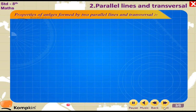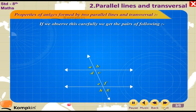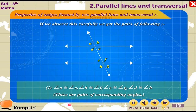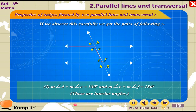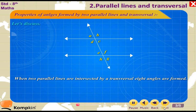Properties of angles formed by two parallel lines and a transversal. Observing carefully, we get the following pairs: 1. Angle A ≅ Angle E, Angle B ≅ Angle F, Angle C ≅ Angle G, Angle D ≅ Angle H — these are pairs of corresponding angles. 2. Angle D ≅ Angle G, Angle B ≅ Angle H — these are pairs of interior alternate angles. 3. Angle A ≅ Angle G, Angle B ≅ Angle H — these are pairs of exterior alternate angles. 4. Angle D + Angle E = 180°, Angle C + Angle F = 180° — these are interior angles.